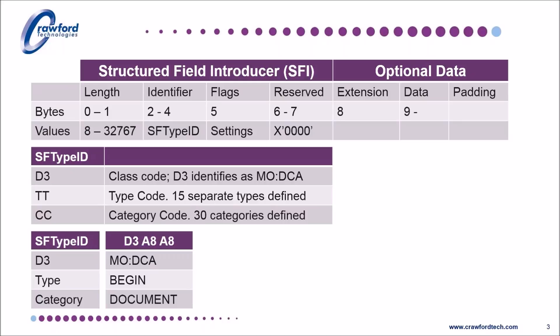So begin page is D3, A8, AF, and end document is D3, A9, A8. If you look at enough AFP files, you'll soon become very familiar with these patterns.